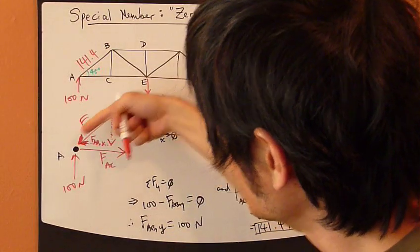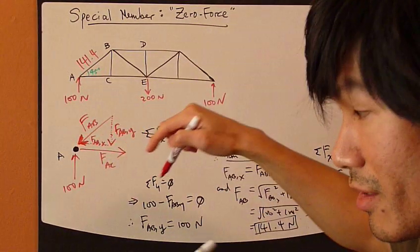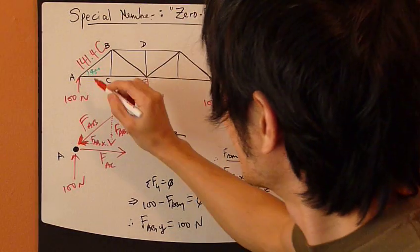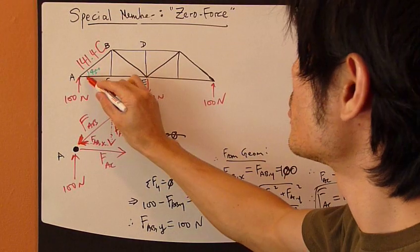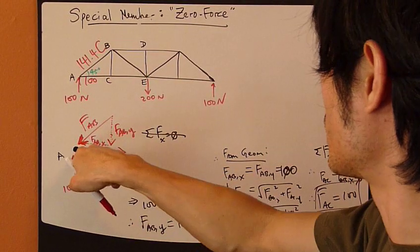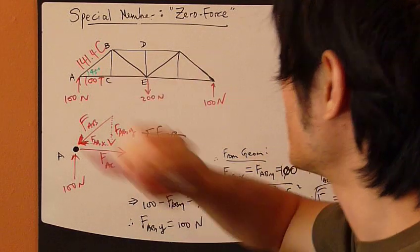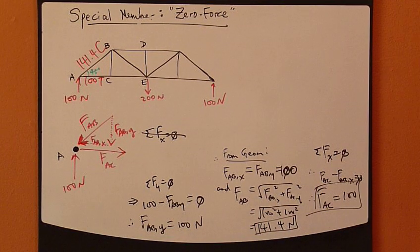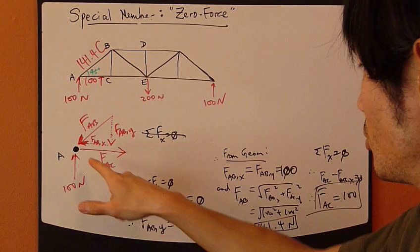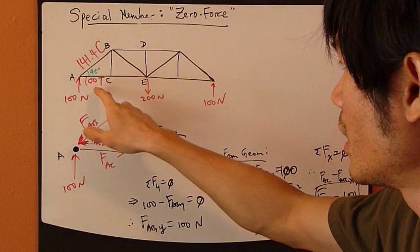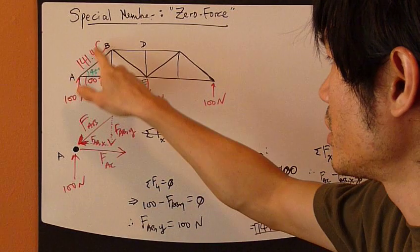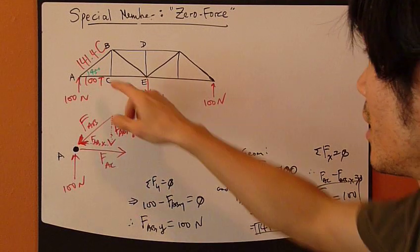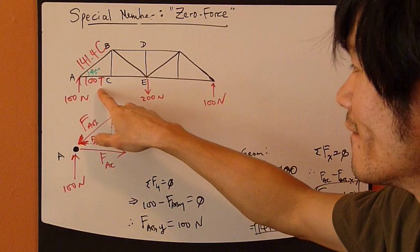I'm going to write down the answer here. So FAB is 141.4 Newton. And since it goes into the joint, using Newton's third law, this is compression. And FAC is 100 Newton. And since it goes away from the joint, this is tension. AC is under tension. First joint is done. We've used joint A, figured out these two. And obviously, AB and AC is not a zero force member because they each have a force in it.